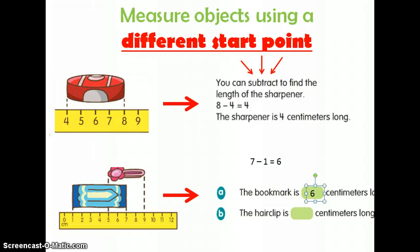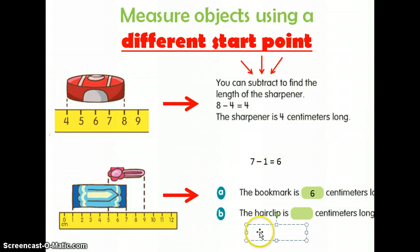That means that you're going to write another subtraction sentence. And you're going to start with nine minus... And they started here at five. And that equals four. So the length is four centimeters.